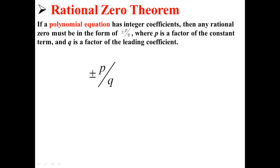If a polynomial equation has integer coefficients, then any rational zero must be in the form of plus or minus p divided by q, where p is a factor of the constant term and q is a factor of the leading coefficient. This is according to the Rational Zero Theorem.